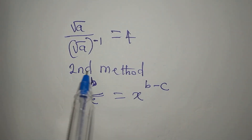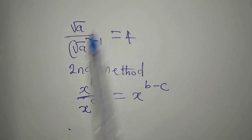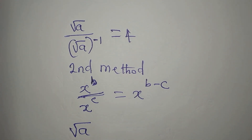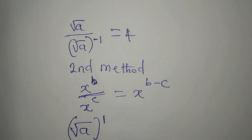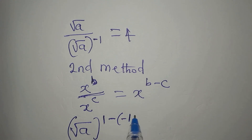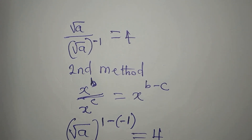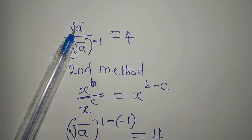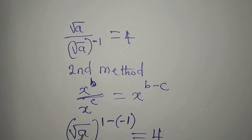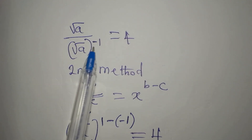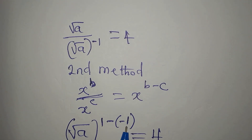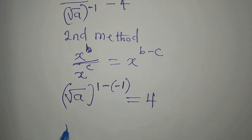The base here is root a and root a — they are the same — so I'll pick root a. The power of the numerator is one, so we have one. Because of the division we have subtraction, so we have minus negative one, equals four. This denominator — the base and the numerator base are the same, so I pick one of them. Root a has an invisible power of one, and the subtraction brings in the first negative sign, then the negative power of one comes in the bracket.